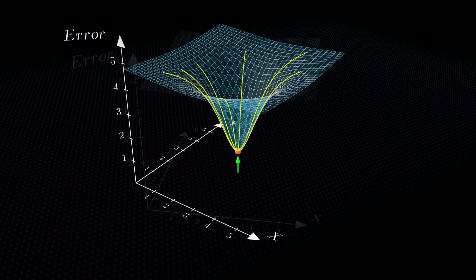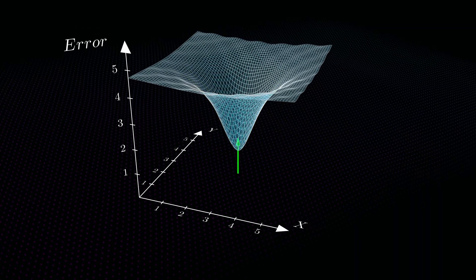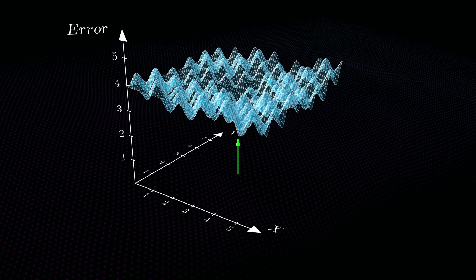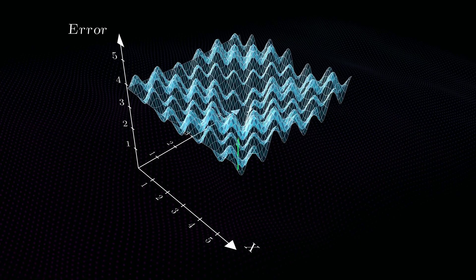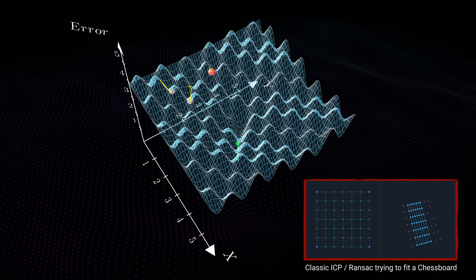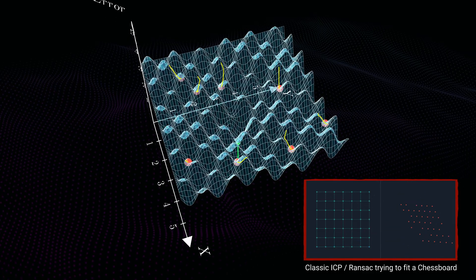But for the chessboard, a nightmare landscape of false valleys as far as the eye can see. Its perfect symmetry creates thousands of potential transforms that allow the model to falsely score well. The classic algorithms will almost always get stuck in the wrong valley, convinced it has found the right answer. It's a trap, set specifically for guess and refine algorithms. And the symmetry of the grid is the bait.